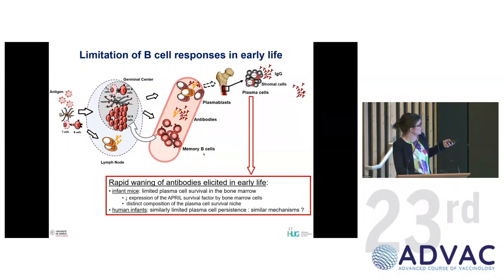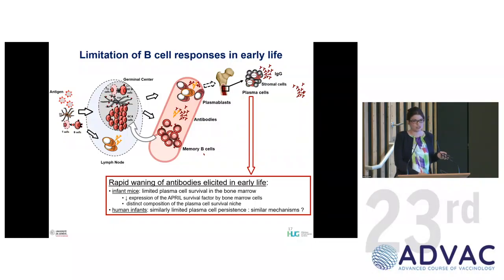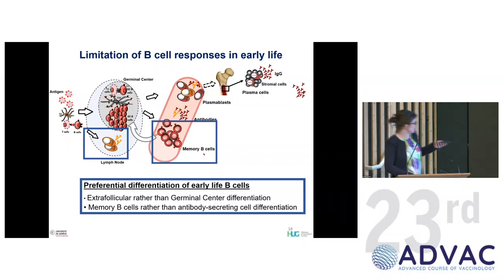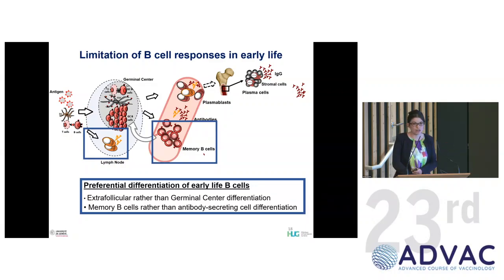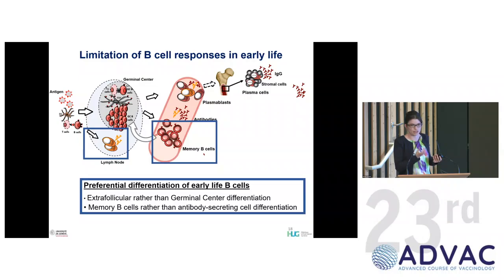In neonates, antibodies wane very quickly over time. Mouse studies show factors are lacking in the bone marrow niche, and in human infants we see antibody levels drop rapidly — which is why we give more vaccine doses in very early life compared to adults. Importantly, B cell differentiation is more in favor of memory B cells in early life compared to antibody-producing cells. Antibodies that don't come out of the germinal center have lower avidity — they are lower quality — because they haven't undergone sufficient rounds of affinity maturation to achieve strong, perfectly shaped binding.